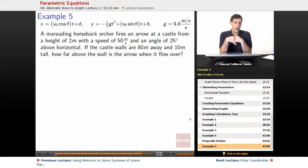Our problem is a marauding horseback archer fires an arrow at a castle. He's on a height of 2 meters because he's on top of a horse. The arrow comes out with a speed of 50 meters per second and an angle of 25 degrees above the horizontal. The castle walls are 80 meters away and they're 10 meters tall. How far above the wall is the arrow when it flies over?